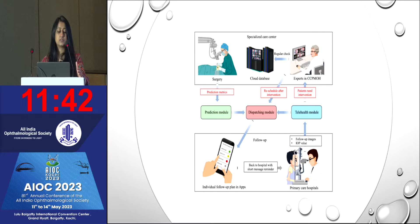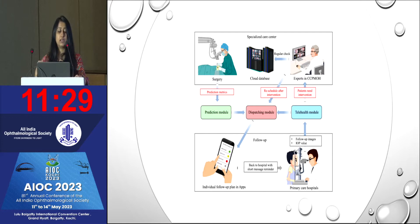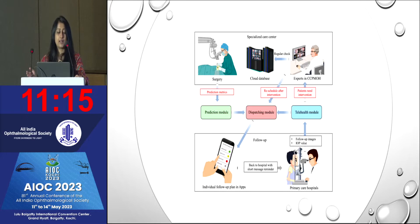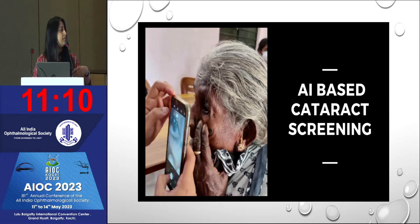There is a triple module system: a prediction module for analyzing prediction metrics, a dispatching module, and a telehealth module where patients needing intervention are screened. The rescheduling after intervention is also taken care of — the patient actually gets a reminder or individual follow-up plan to come back for follow-up. SAHR has beautifully shown how diabetic retinopathy can be screened by their software.